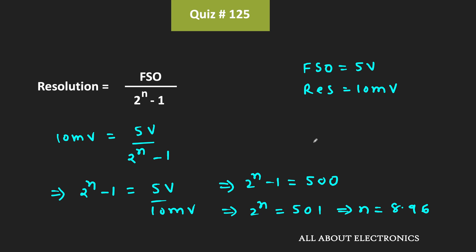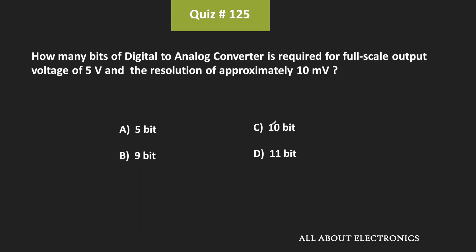Taking the next integer, the value of n is equal to 9. If we consider n equal to 8, then 2 to the power 8 is equal to 256, which is not sufficient. Therefore, the required value of n is equal to 9. That means for a 9-bit DAC, whenever the full scale output voltage is equal to 5V, the resolution is approximately equal to 10mV. Therefore, for the given question, option B is the correct answer.